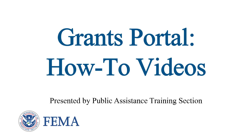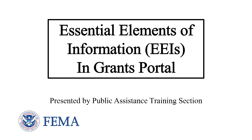Welcome to the Grants Portal How-To video series, presented by FEMA's Public Assistance Training section. This video will cover the process for an applicant to respond to Essential Elements of Information, or EEIs, in Grants Portal. First, we will review some terms and get an overview of what EEIs are and how they are used in the Public Assistance, or PA, grant application. We will follow this with a demonstration of locating, completing, and submitting an EEI in Grants Portal.